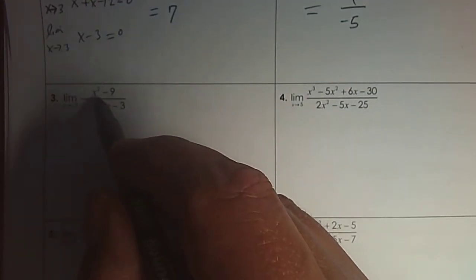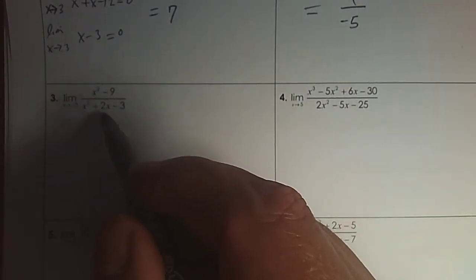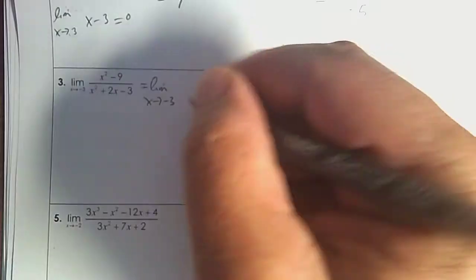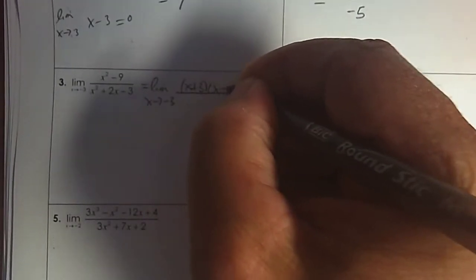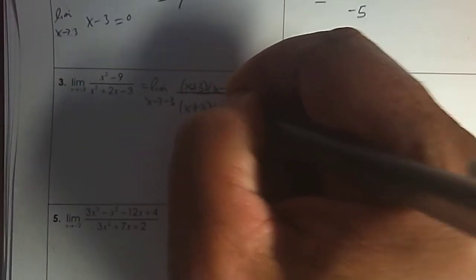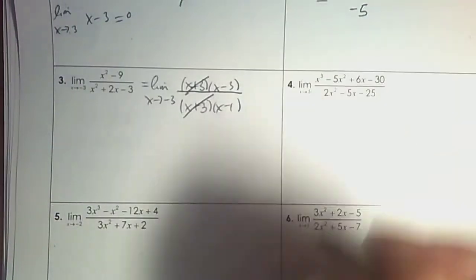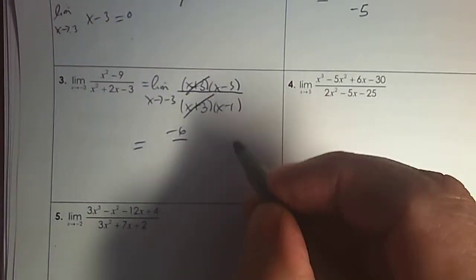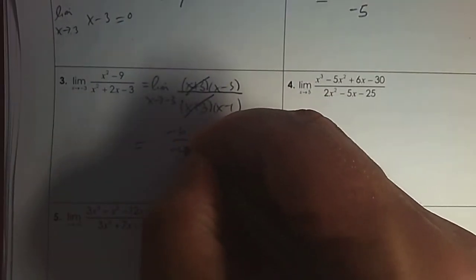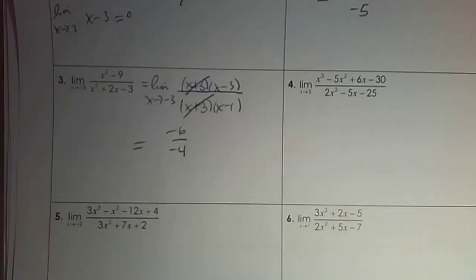Same thing here. Plug in negative 3 into the numerator and denominator, and you do get indeterminate — it's 0 over 0. So we're going to factor the numerator, factor the denominator, and then divide out the hole. Now plug in again: that's negative 6 and negative 4. I don't need to reduce it, but it is 3 over 2.